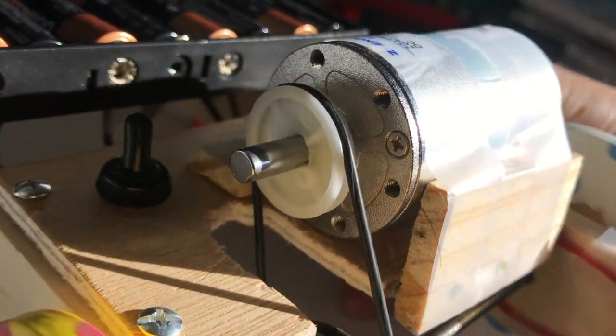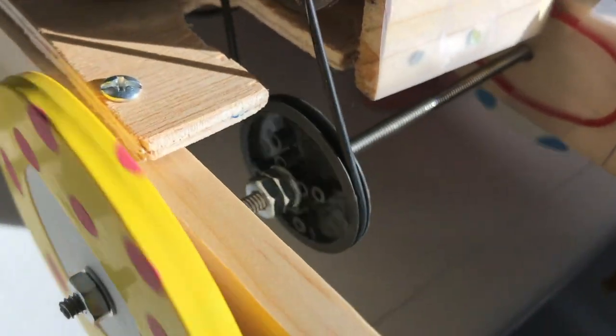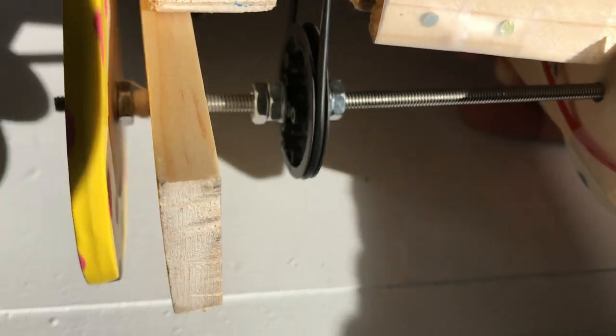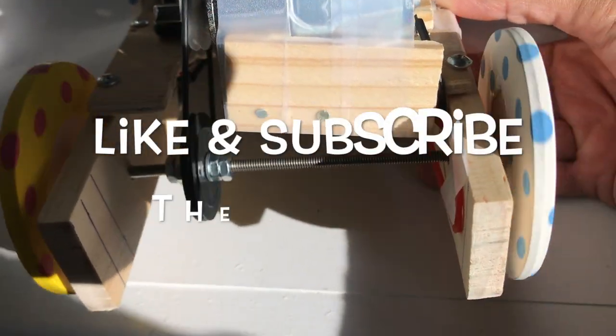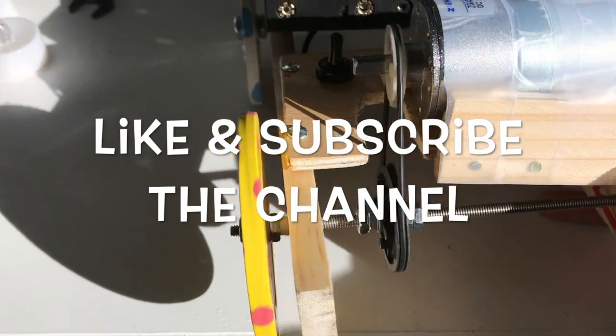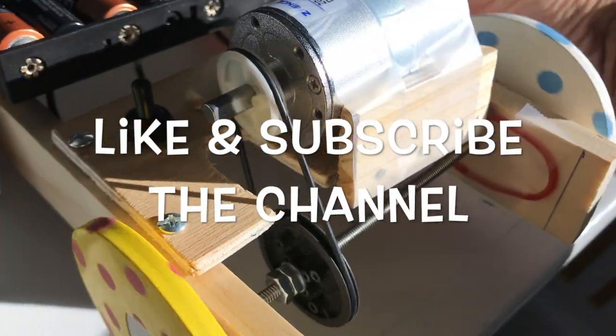Through this rubber band or string, it's moving the axle and that's how the wheels are rotating. So were you able to learn something from this video? Well, let me know in the comments section below.